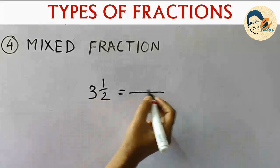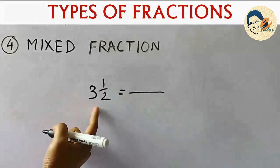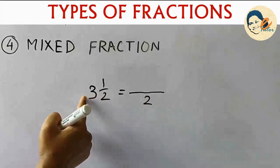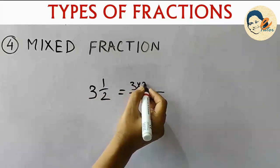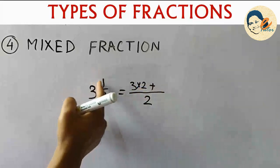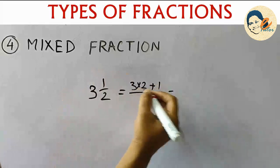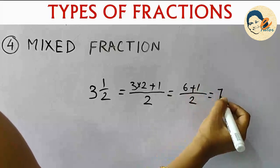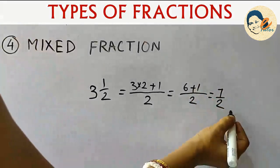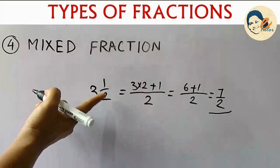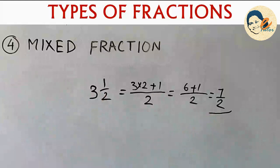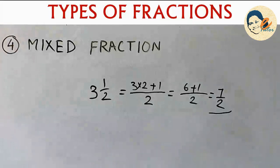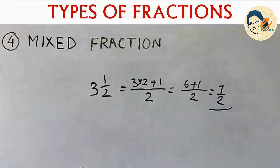For example, 3 and a half — you read it as 'three whole and half.' To simplify this: multiply the denominator 2 by the whole number 3 to get 6, then add the numerator 1, giving 7/2. So the simplified form of 3 and a half is 7/2, where the numerator is greater than the denominator — making it an improper fraction.